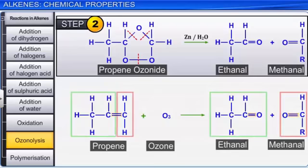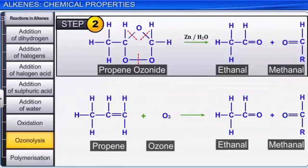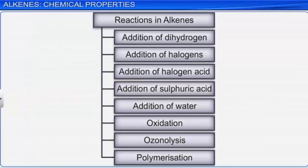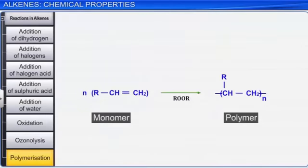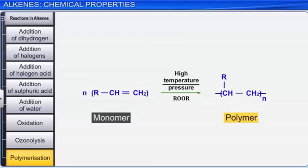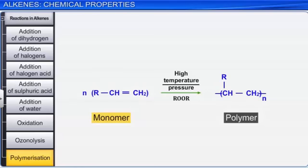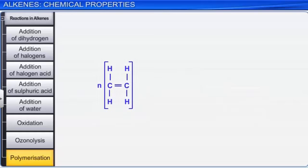Let us move on to the last reaction — polymerization. Alkenes undergo addition polymerization when heated under pressure in the presence of suitable catalysts. In this, a large number of molecules of the same species join together to form a giant molecule called a polymer. The simple compound which forms the polymer is called a monomer. For example, ethene when heated to 1000°C under 1000 atmospheric pressure undergoes polymerization to form polythene.